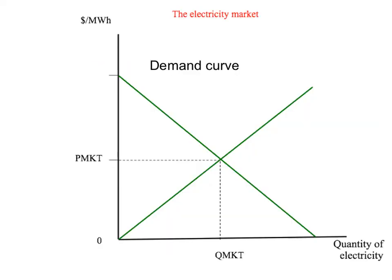Let's look at the electricity market. On the vertical axis we have dollars — the price in dollars per megawatt hour — and on the horizontal axis we have the quantity of electricity. We have a demand curve for electricity, this downward sloping green line. As usual, the demand curve will be the marginal private value curve. And because we're considering the externality on the production side, not the consumption side, the demand curve is also the marginal social value curve. There's no externality on the demand side, so demand equals marginal private value equals marginal social value.